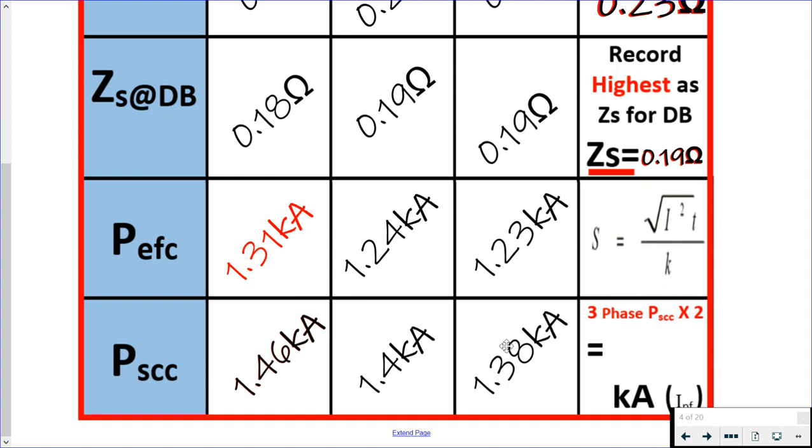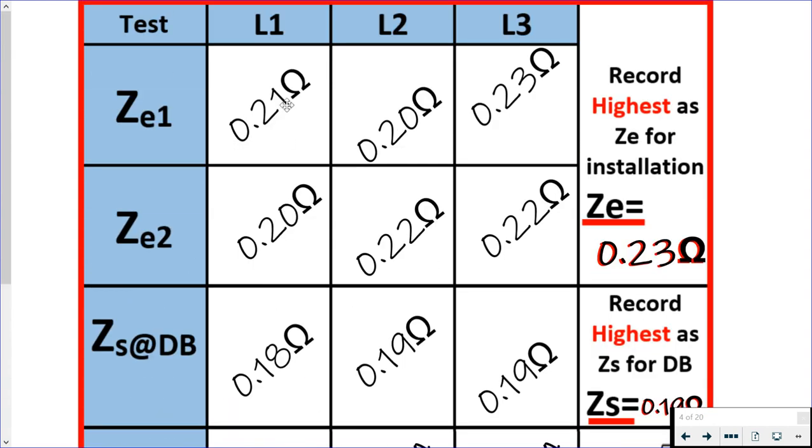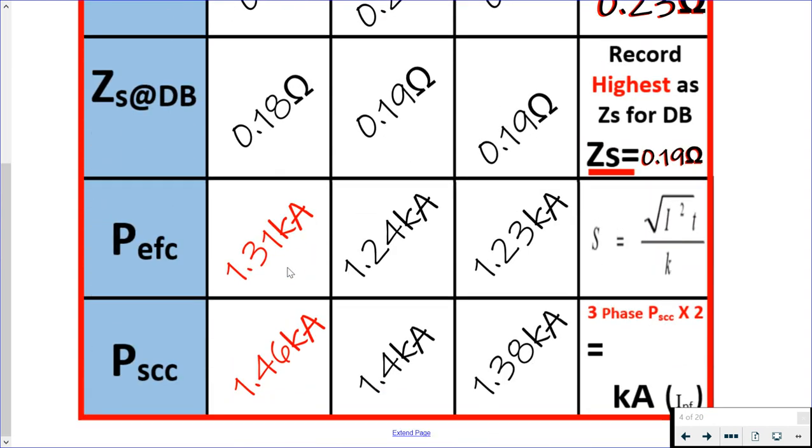Then we would carry out our prospective short circuit current: line one to neutral, line two to neutral, line three to neutral. The highest of which we then take is 1.46 kiloamps. Because it's a three phase system, we will multiply it by two. If this was just a single phase supply, I would be taking that 1.46 and recording it as my IPSC. When it's a three phase system, we take that 1.46 and we multiply it by two, giving us 2.92 kilo amps.